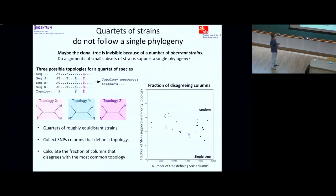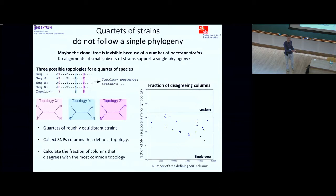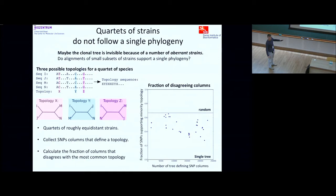Maybe the problem is that just a couple of strains are throwing a wrench in things — if we removed a couple of problematic strains, maybe we could find a nice consistent phylogeny for the others. So we went to the other extreme and looked at just quartets of strains — the smallest number where you can have a meaningful phylogeny. For four strains I, J, M, N there are three possible topologies, each corresponding to a type of SNP pattern.